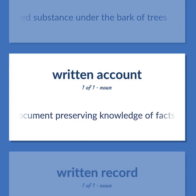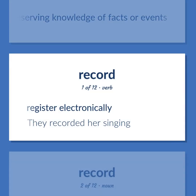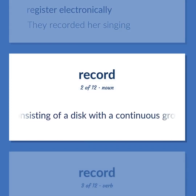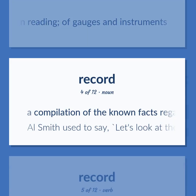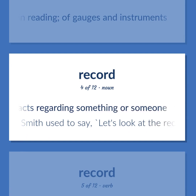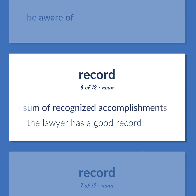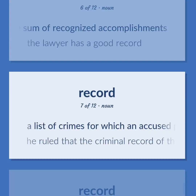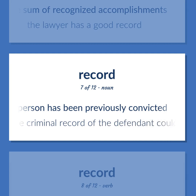Record: a written document preserving knowledge of facts or events. Register electronically — they recorded her singing. Sound recording consisting of a disc with a continuous groove used to reproduce music by rotating while a phonograph needle tracks in the groove. Indicate a certain reading of gauges and instruments. A compilation of the known facts regarding something or someone — Al Smith used to say, let's look at the record. Be aware of. The sum of recognized accomplishments — the lawyer has a good record. A list of crimes for which an accused person has been previously convicted — he ruled that the criminal record of the defendant could not be disclosed to the court.